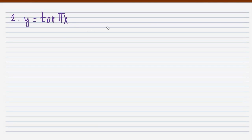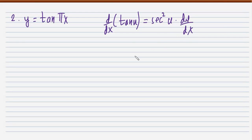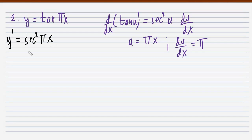Problem number 2: y = tan(πx). You can pause the video and solve on your own, then check your answer. The derivative of tan(u) equals sec²(u) times the derivative of u with respect to x. Here u is πx, and since π is a constant, its derivative is simply π. Therefore, y' = π·sec²(πx).